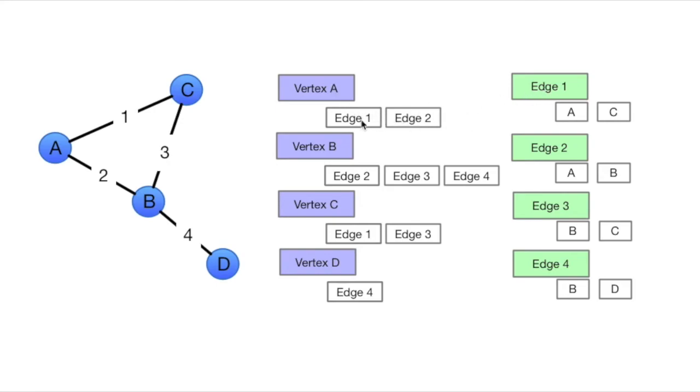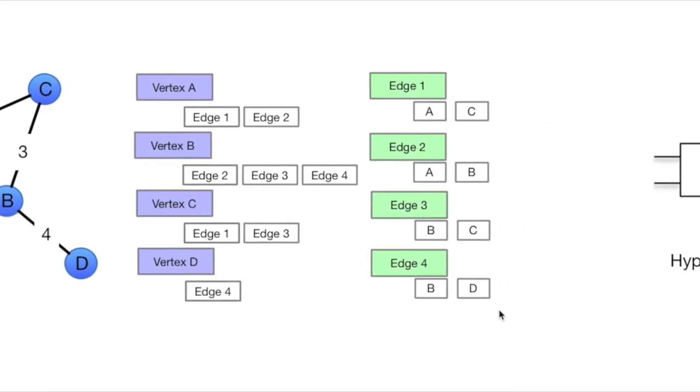The edge data structure, so edge 1, is going to have a list of A and C. So edge 1 has connections for A and C, and that's how we're working it here. This is a pretty common way to do it in circuit design, and it makes it fairly easy to do the hyperedges.